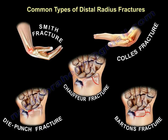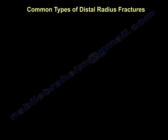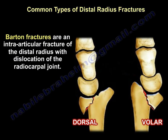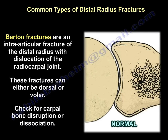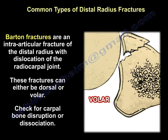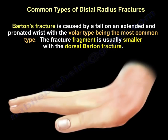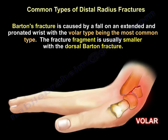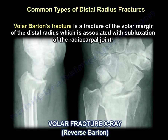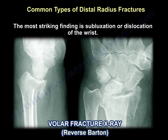Another type is the Barton fracture, which is an intra-articular fracture of the distal radius with dislocation of the radiocarpal joint. This fracture can be either dorsal or volar — always check for carpal dysfunction or dissociation. Barton fracture is caused by a fall on an extended and pronated wrist. The volar type is the most common and typically involves a smaller volar fragment.